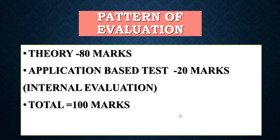Now let's go to the pattern of evaluation. Here you will have a Theory part that is 80 marks, and ABT — Application Based Test — which is 20 marks. That is internal evaluation. So the total for every subject will be 100 marks. Theory paper is 80 marks, Application Based Test is 20 marks — final 100 marks per subject. This applies to every subject, students.